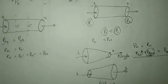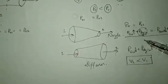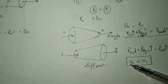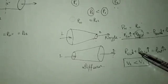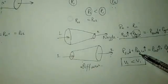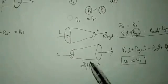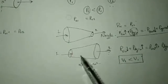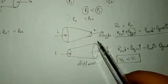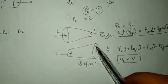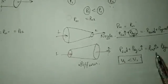Now what happens in a diffuser? In a diffuser the flow decelerates — velocity at outlet is less than at inlet. So static pressure plus dynamic pressure at inlet equals static pressure plus dynamic pressure at outlet. At inlet the velocity is higher so dynamic pressure is more and static pressure is less. At outlet, dynamic pressure is less and static pressure is more. This is the case of a diffuser.